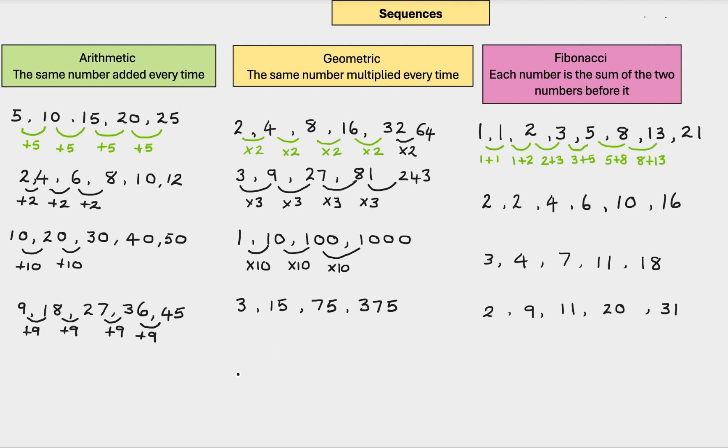And then finally, another example. What did we times 3 by to get 15? Well, it's 5. 3 times 5 is 15. 15 times 5 is 75. 75 times 5 is 375.